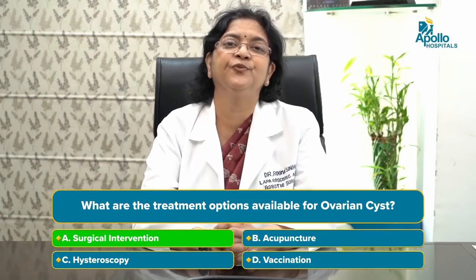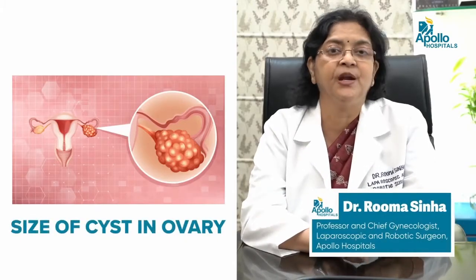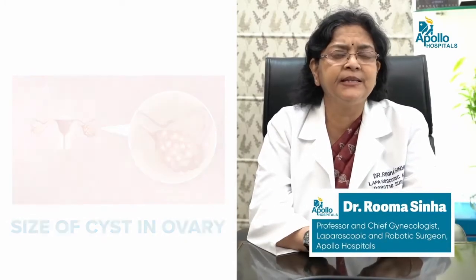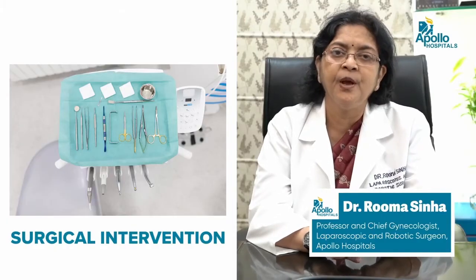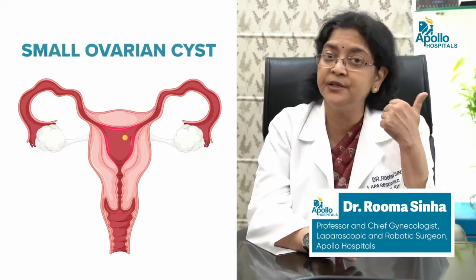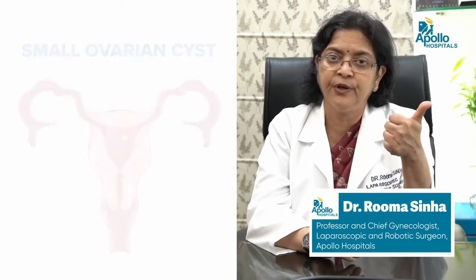Treatment of an ovarian cyst depends on two things: the type of cyst and its size. Any large cyst will definitely require surgical intervention. If the cyst is small and thought to be a functional cyst, we can observe for a few months to see if it disappears. If the cyst belongs to the second category — a non-cancerous tumor — we can observe if it is small and not causing problems, but removal is recommended when these cysts exceed 5 centimeters, as they will not disappear on their own and medication will not help.